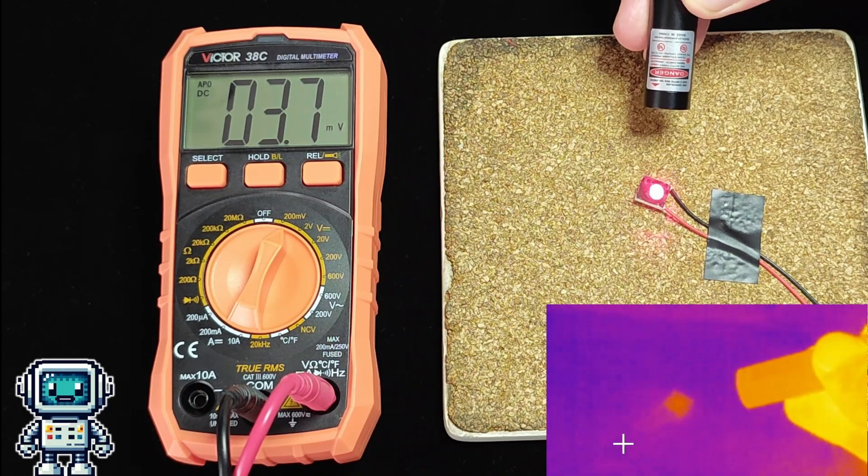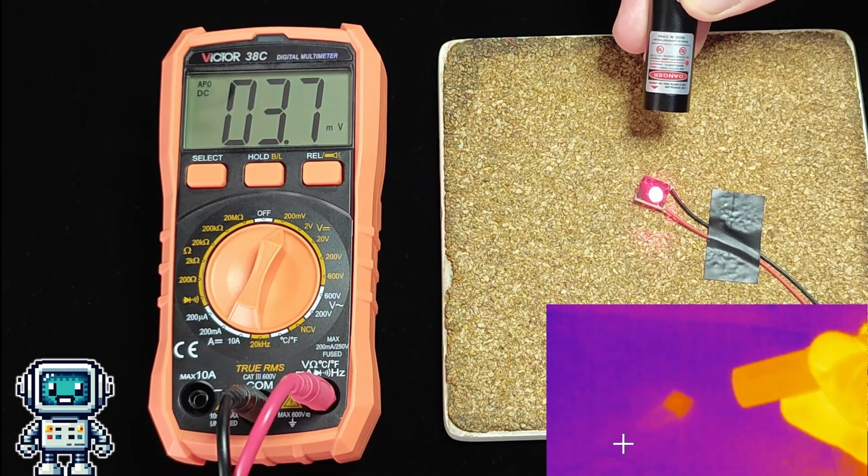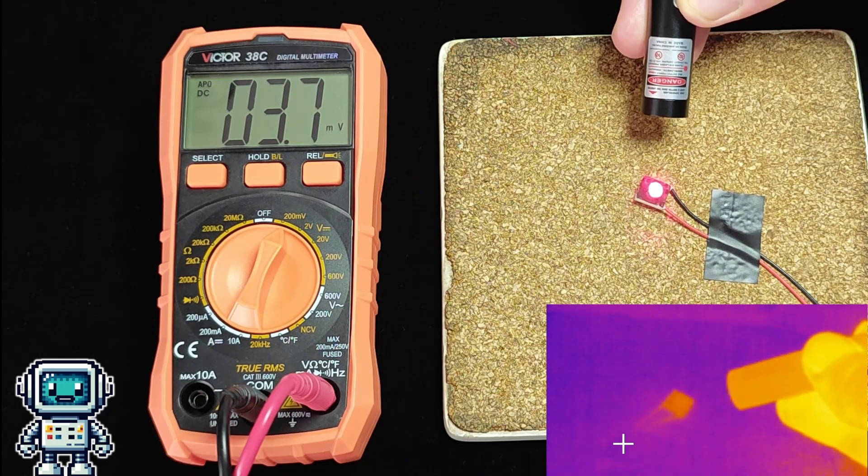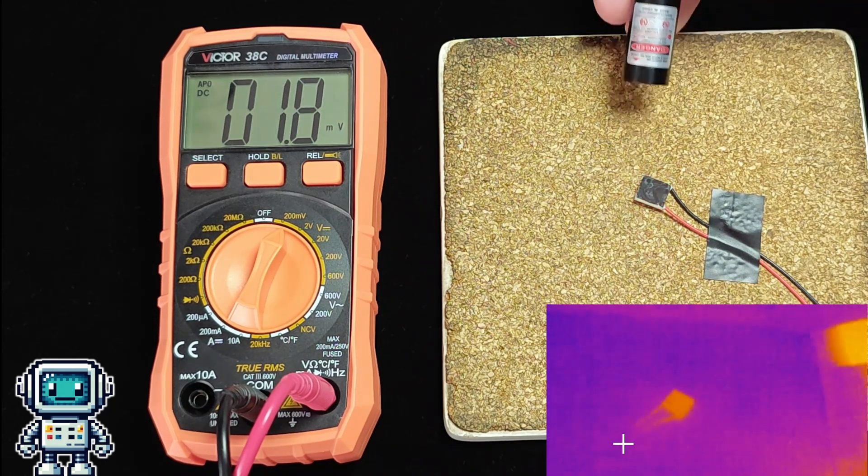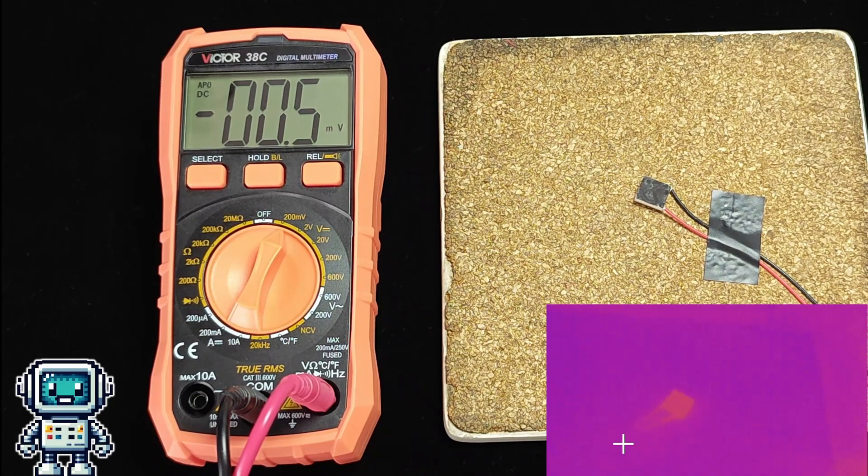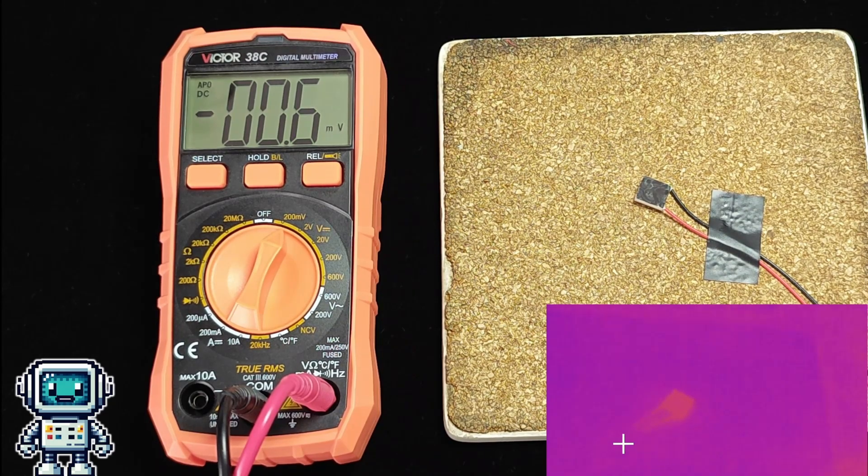When we shine this red laser onto the thermopile, you can see the surface heating up, and again the meter records a value that is proportional to the laser power. We thought we would do a little experiment to see how linear this relationship actually is.